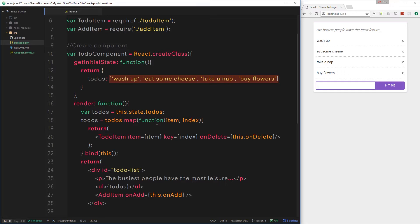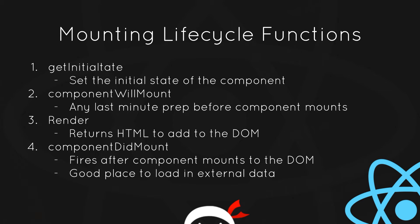So getInitialState fires before render. getInitialState fires and sets up the state of the component — this data right here — then render fires and renders this code to the browser using that data. There are many more different lifecycle functions which make up the component lifecycle, and we're going to explore a few of them in this tutorial. First, let's talk about mounting lifecycle functions — the functions that occur when a component is mounted to the DOM. The first one we've already seen is getInitialState, which sets the initial state of the component.